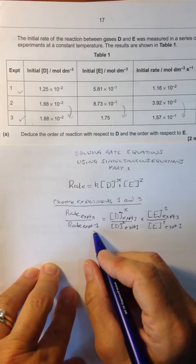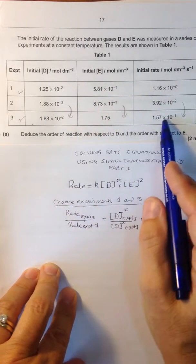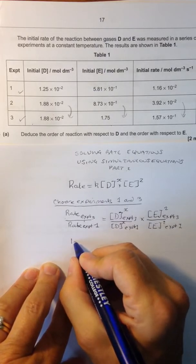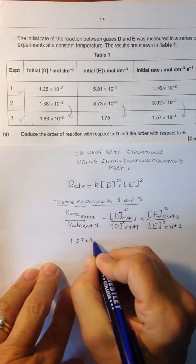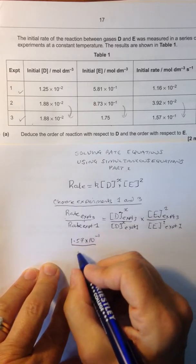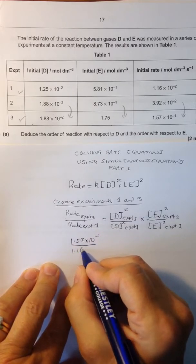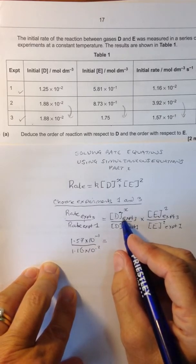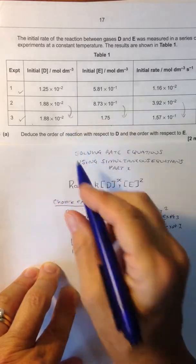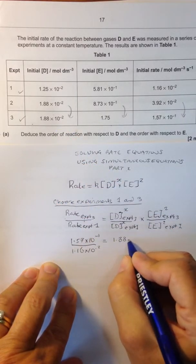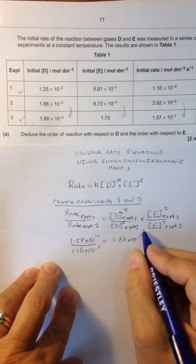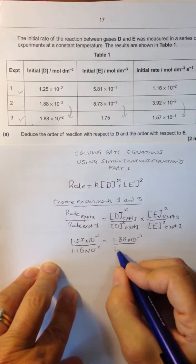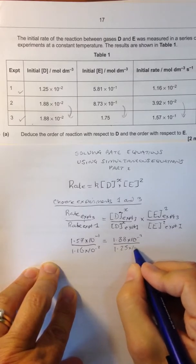Let's now substitute in our values, looking at the data we've been given. So the rate in experiment 3 is 1.57 times 10 to the minus 1. The rate in experiment 1 is 1.16 times 10 to the minus 2. And that is equal to the concentration of D in experiment 3, which is 1.88 times 10 to the minus 2, divided by the concentration of D in experiment 1, which is 1.25 times 10 to the minus 2.